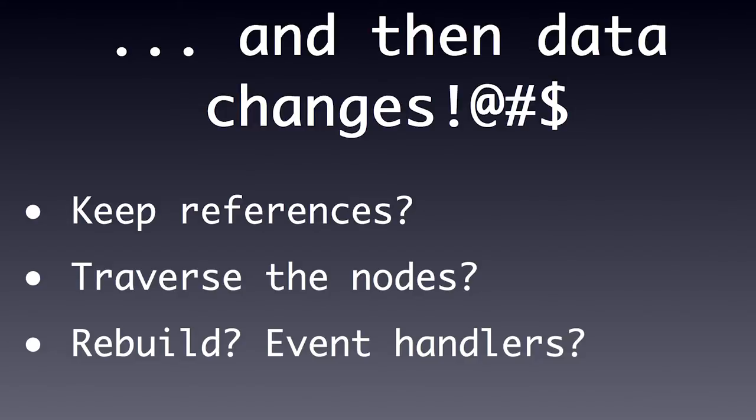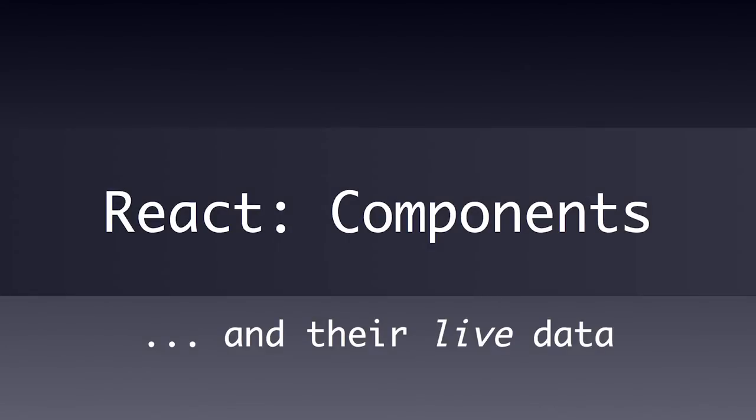Traversing is slow — looking for stuff all the time — and you have to write a lot of code just finding things. The only sane solution is to just rebuild the whole thing. You can put it in a function and call it with the new data, but that's expensive. Plus you might have inputs where the user has typed something and you can't wipe out their input. And you might have event handlers in table cells or buttons that you have to clear out so they don't create memory leaks in some browsers.